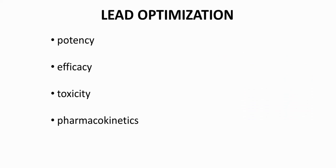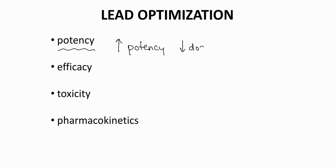One is potency. Hits and leads are fairly potent, meaning they affect the target at a somewhat low concentration. During lead optimization, chemists will try to improve potency so that you can decrease the dose of the drug.